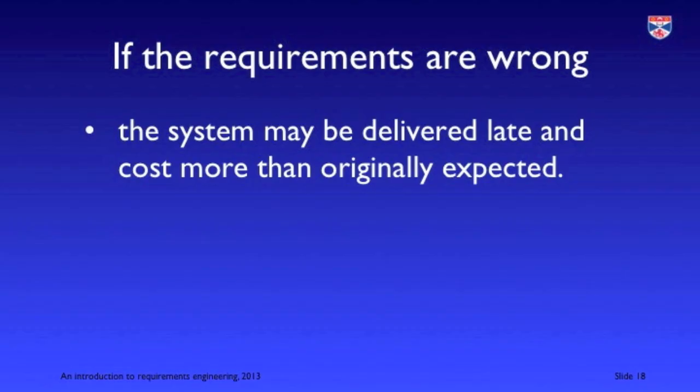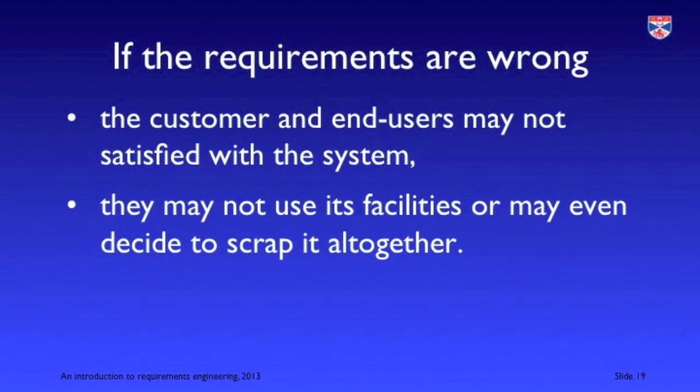If we get the requirements wrong, the most frequent consequence is budget overrun and late delivery. This happens because we have to do extra, unanticipated work during the development process to fix problems that stemmed from incorrect requirements, and consequently it takes longer and is more expensive to develop the software.